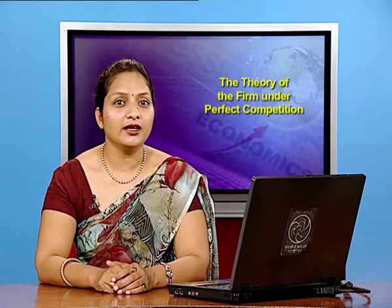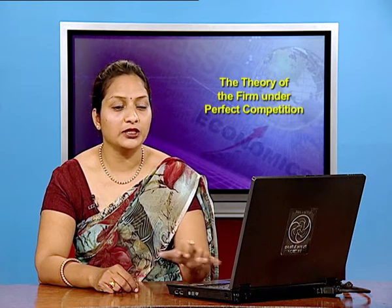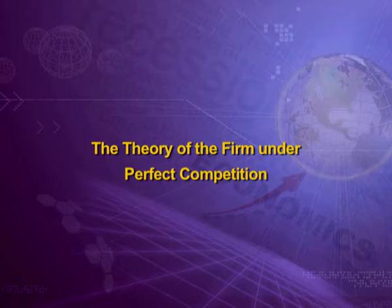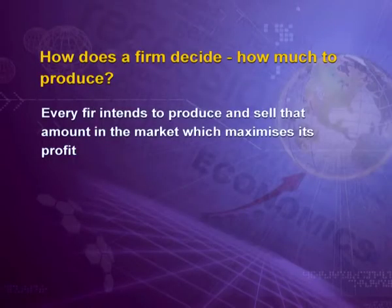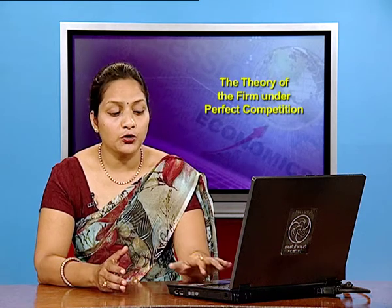Hello students, welcome once again to the video lecture series designed for class twelfth students. In the previous chapter we discussed concepts related to a firm's production function and cost curve. Today we are starting a new chapter: the Theory of the Firm under Perfect Competition, chapter 4 of your first book. The focus of this chapter is different — here we ask: how does a firm decide how much to produce?